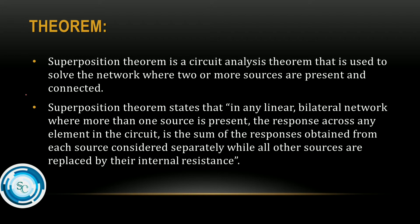Bilateral network: the current flow in the direction of the circuit — the property is not changed. That is called a bilateral circuit. Here we have a linear bilateral network where more than one source is present.